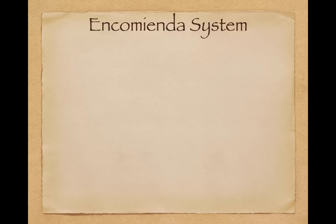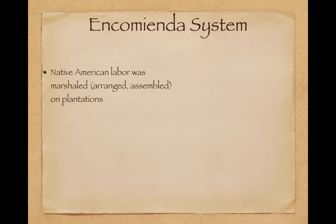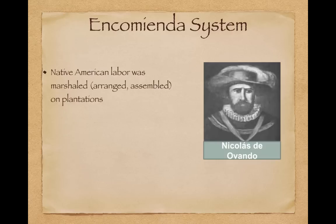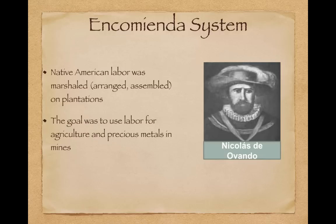The Spanish instituted what is known as the encomienda system in their colonies. This is when Native American labor was marshaled — a term identified in the APUSH curriculum — meaning arranged or assembled on plantations. Native Americans were forced to work on plantations and in mines. The encomienda system was created by Nicholas de Avando, and the goal was to use labor for agriculture and precious metals such as gold and silver.